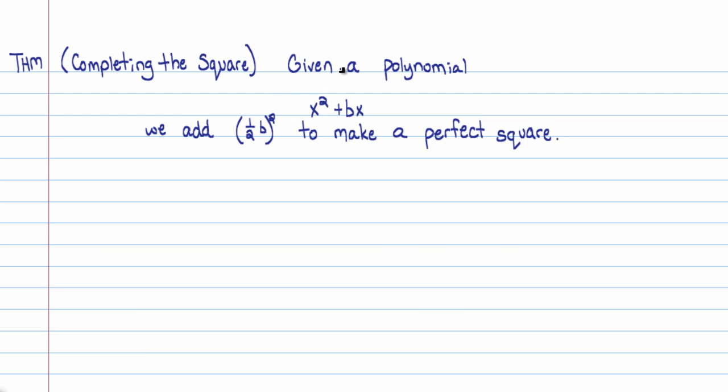That is how we complete the square. Now, I want you to note a few things. The coefficient on x squared here is just 1 — it's not 5x²+bx or -2x²+bx, it is x²+bx. That's very important; you cannot complete the square otherwise, or you have to make some adjustments. Another thing to know is that completing the square changes what the polynomial is. It's like if somebody gave you $5 and you rewrite it as 5+1 — I'm making you change the polynomial, which seems pretty wrong. You shouldn't actually change the value of a polynomial, and we'll talk about that. But first we need to get used to actually being able to make a perfect square given a polynomial.